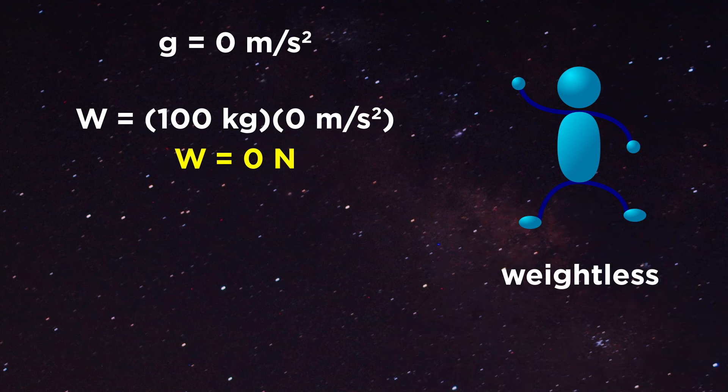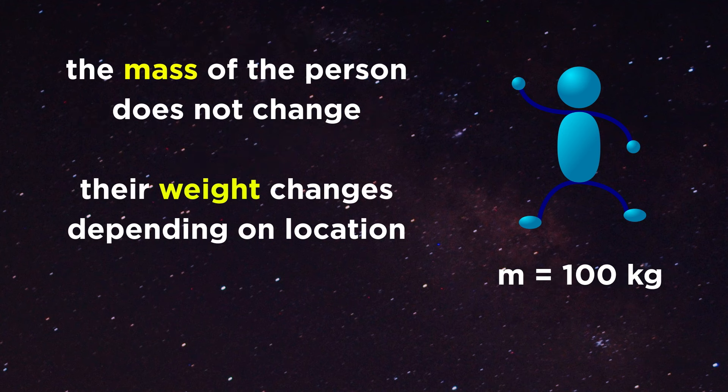In the vacuum of space, far away from any massive object, the person will be essentially weightless, since there will be no appreciable acceleration due to gravity. In all of these cases, the mass of the person does not change, but their weight will vary depending on the presence and strength of a gravitational field.